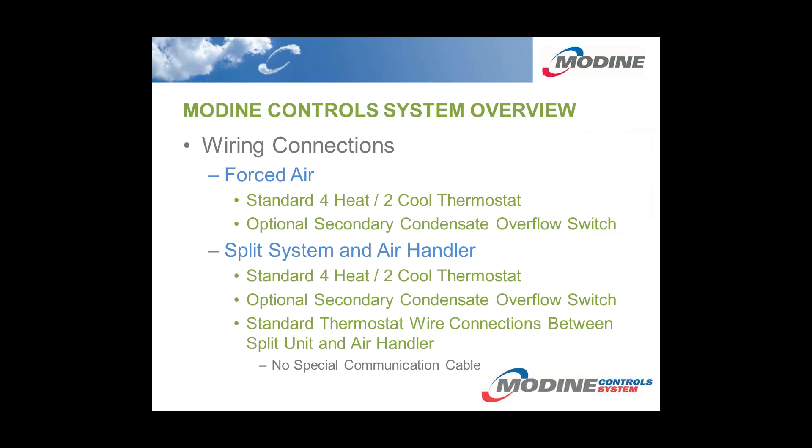Wiring connections are very simple. Here are a few different connections for a forced air unit. We use a standard four heat to cool thermostat, two stages for the compressor, and two stages for the auxiliary electric heat. Split systems are very similar — there are no special communication cables required to go between the unit and the air handler, just standard thermostatic signals.